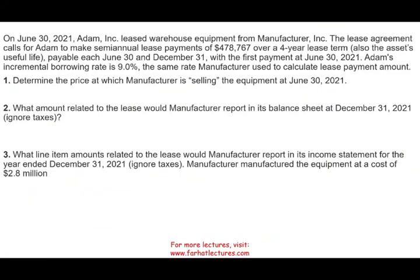Let's go ahead and get down to business. On June 30th, Adam leased warehouse equipment from Manufacturer Inc. The lease agreement calls for Adam to make semi-annual lease payments of $478,767 over a four-year lease term, payable each June 30th and December 31st, with the first payment on June 30th, 2021 — the same date the lease was signed. Adam's incremental borrowing rate is 9%, the same rate the manufacturer used to calculate the lease payment, so the interest rate is not an issue here.